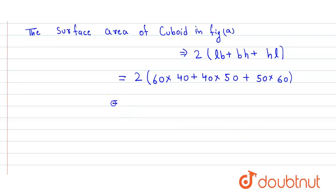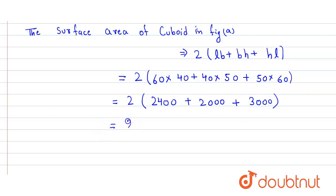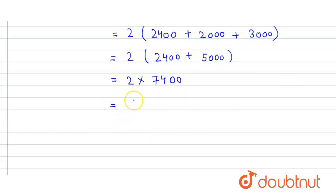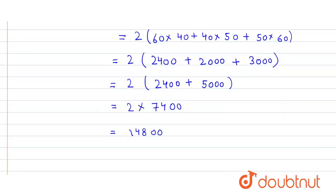Solving this: 2 into (2400 plus 2000 plus 3000), which equals 2 into 7400. So the total surface area of cuboid A is 14,800 centimeter square.